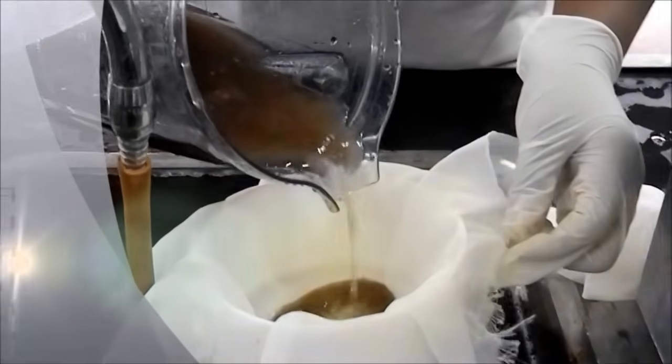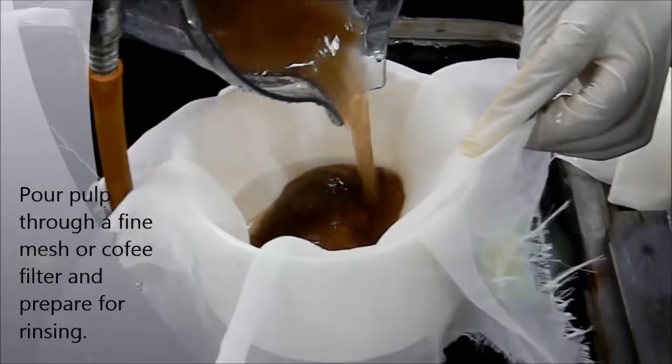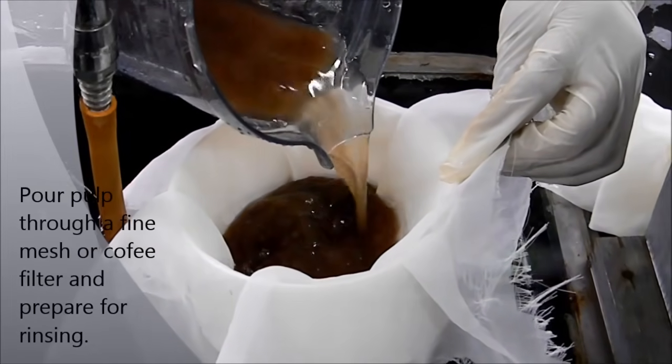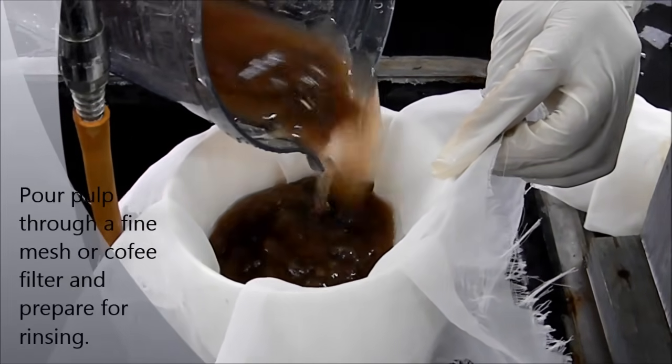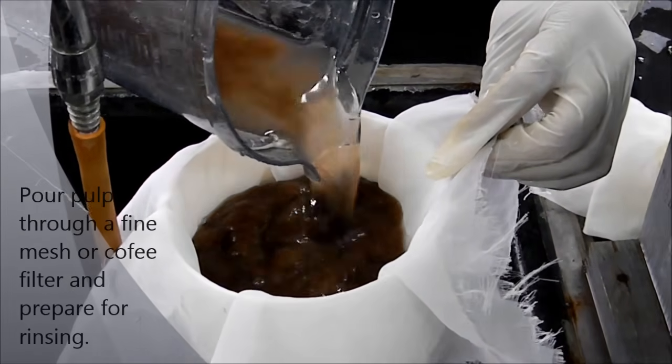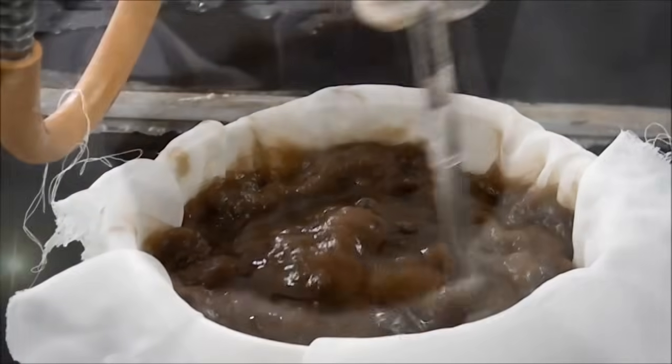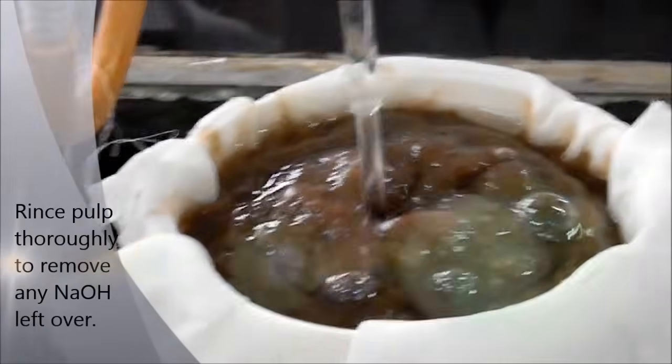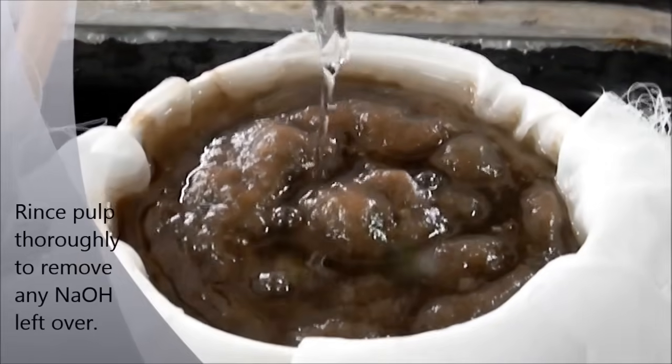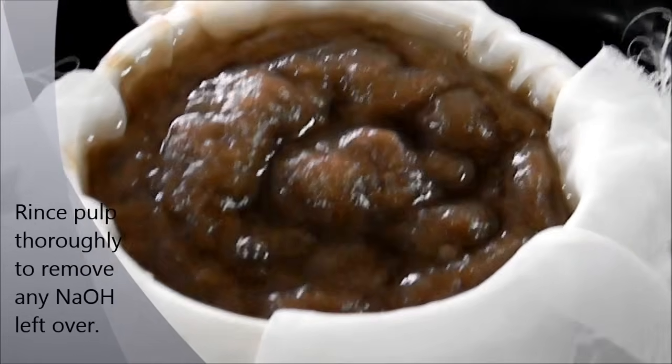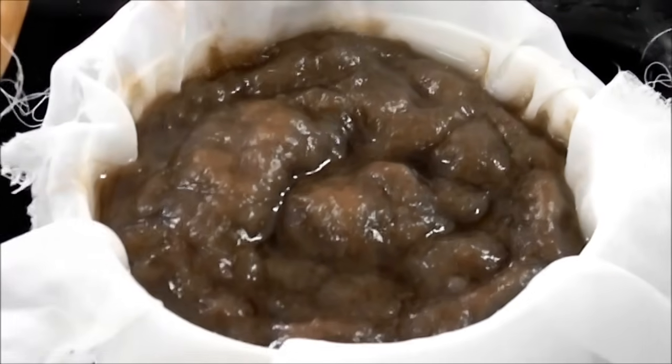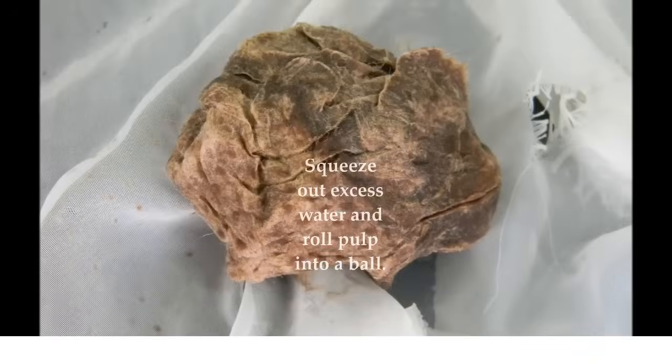Next thing is to rinse that again. Strain off the water in order to get rid of as much sodium hydroxide as possible. And you keep rinsing. And you can add some hot water if you want to help remove a lot of the sodium hydroxide. Then you have now pulp.